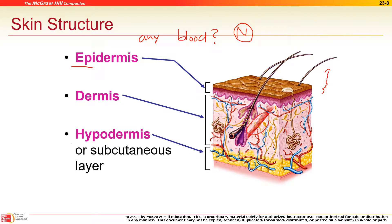'Hypo' means below, so below the skin we have the hypodermis, also known as subcutaneous tissue ('sub' and 'cutane' both refer to beneath the skin). All that yellow material is fat, and below the fat is muscle.